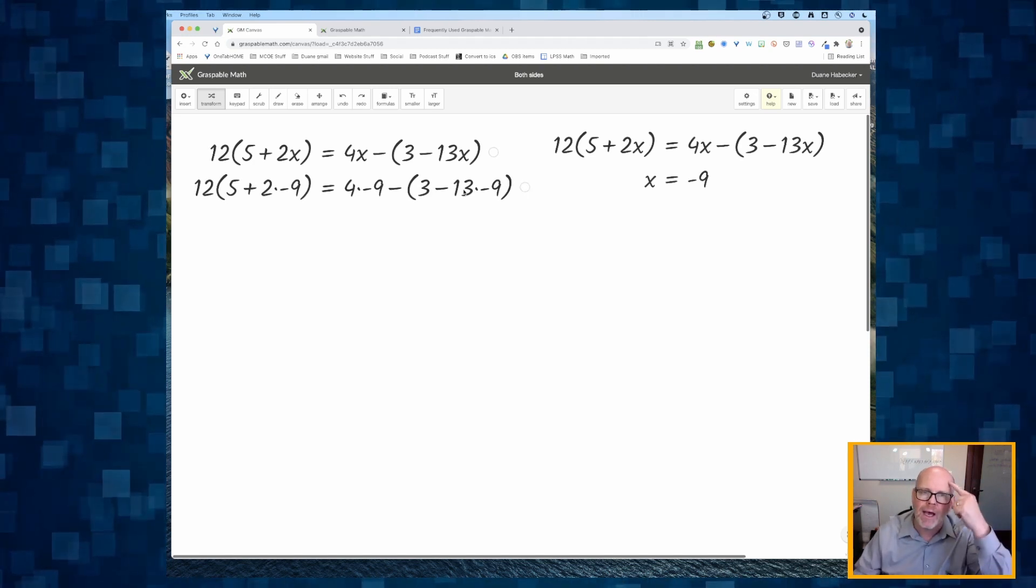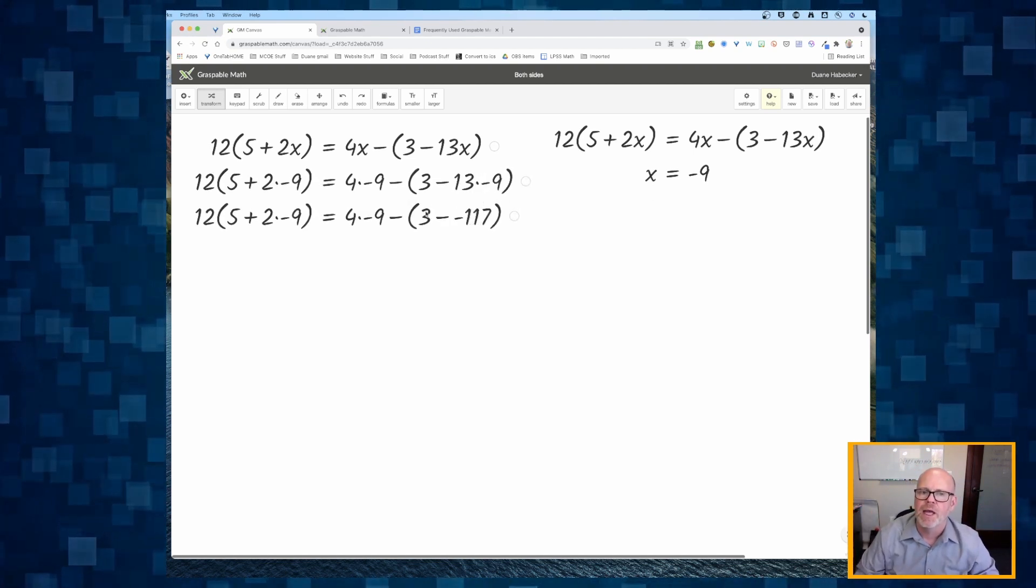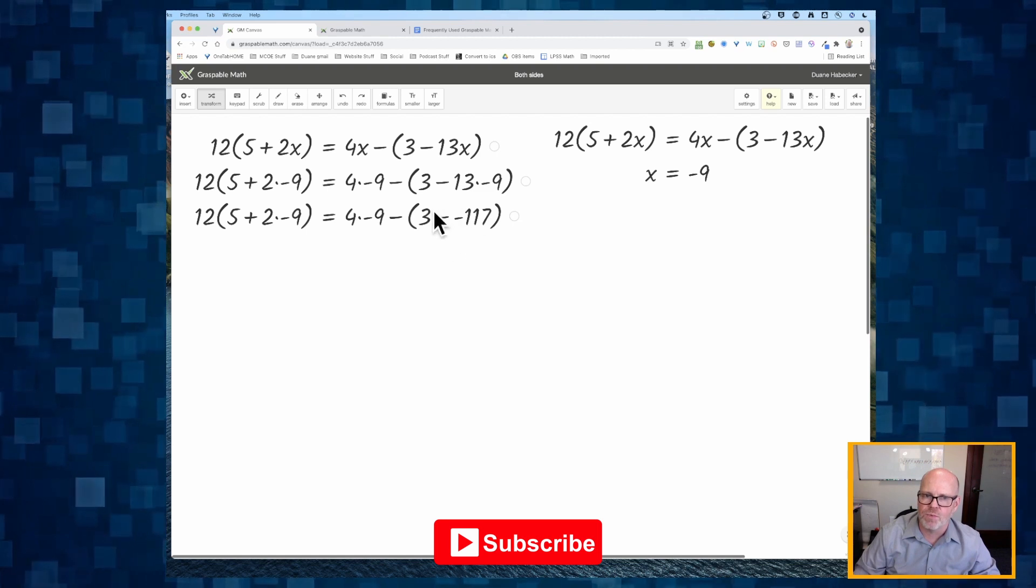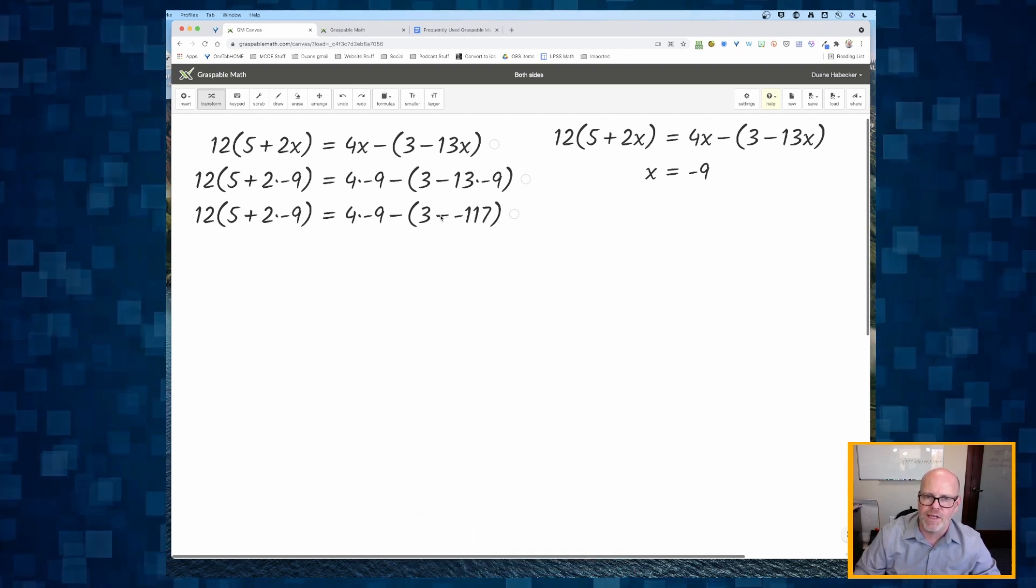I need to click on this multiplication to do the multiplication first. And then I'll simplify this 3 minus negative 117.